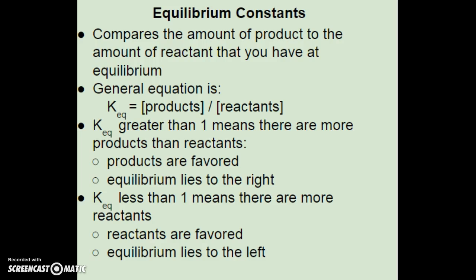To calculate the equilibrium constant, you take the concentration of the products at equilibrium and divide by the concentration of the reactants at equilibrium. If K-eq is greater than 1, there are more products than reactants — products are favored and the equilibrium lies to the right. If K-eq is less than 1, there are more reactants than products — reactants are favored and the equilibrium lies to the left.